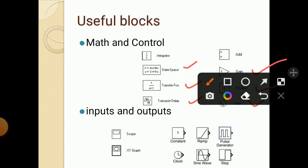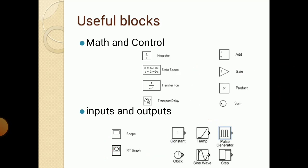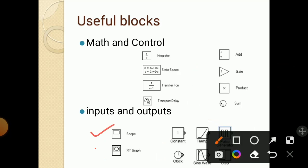Input and output: input can be shown by its symbol. Scope and XY graph are output signs — in the scope we get output, and XY graph plots the XY graph. Constant, ramp input, pulse generator, clock, sine waves, and step input are all types of inputs available.